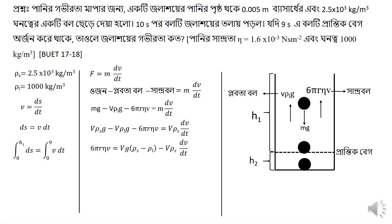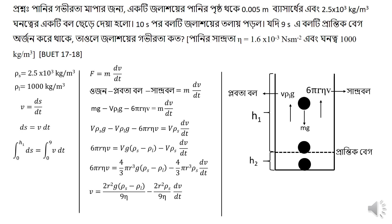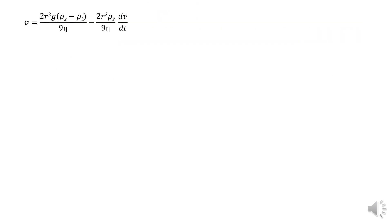The volume is (4/3)·pi·r³. Adding 6·pi·r·eta·v, the terminal velocity formula gives: V_t equals 2·r²·(rho_s minus rho_l)·g divided by 9·eta, minus (2r²·rho_s / 9·eta)·(dv/dt). Here V_t is the terminal velocity. We have written V_t, where T stands for terminal velocity.